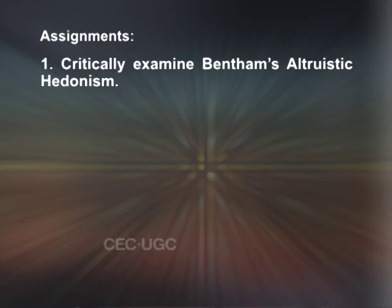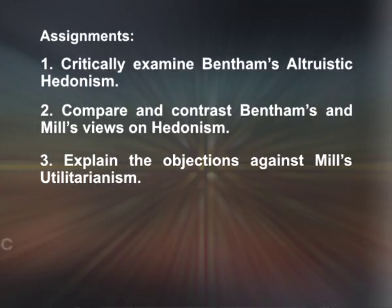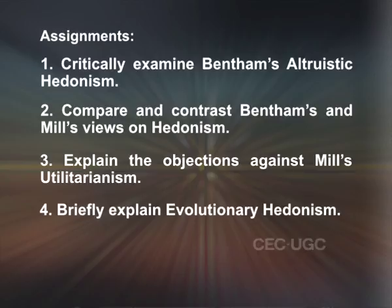There are some assignments for you to work out. A: Critically examine Bentham's altruistic hedonism. B: Compare and contrast Bentham's and Mill's views on hedonism. C: Explain the objections against Mill's utilitarianism. D: Briefly explain evolutionary hedonism.